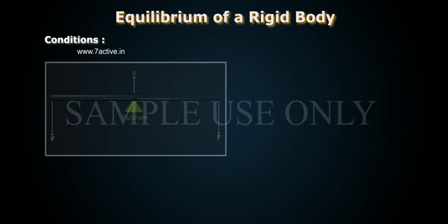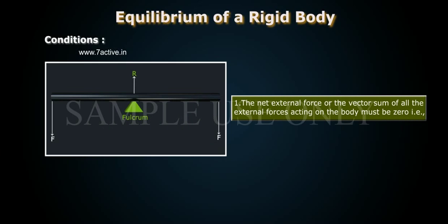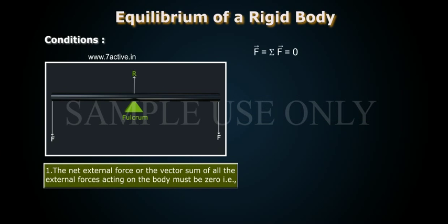For a rigid body to be in mechanical equilibrium, two conditions have to be satisfied. First, the net external force, or the vector sum of all the external forces acting on the body, must be zero. That is, F̄ = ΣF̄ = 0.